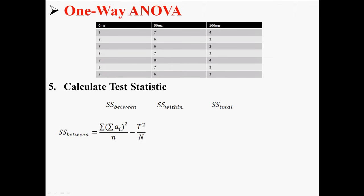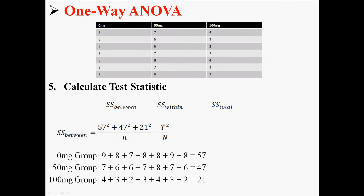You're going to take the sum of each of the three groups, you're going to get 57, 47, 21. You're going to square each of those sums, and then you're going to add together all of those sums. That's what that means. So hopefully if you're good with that, you should be good with this whole equation.